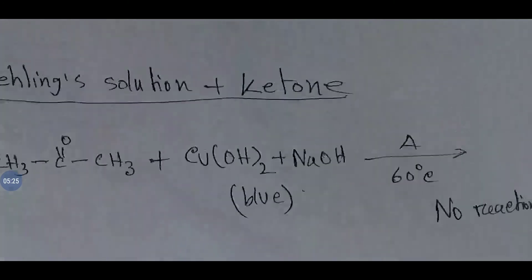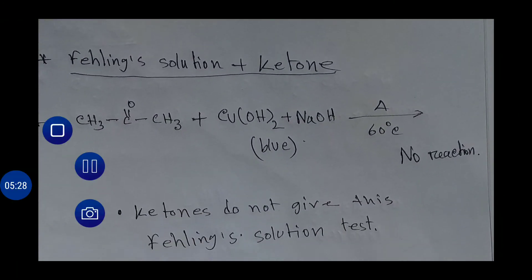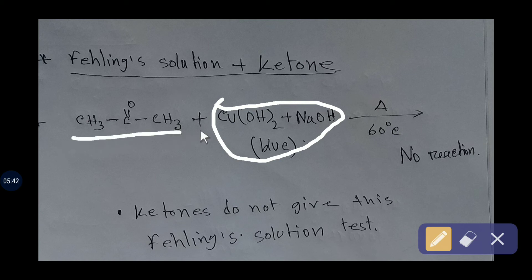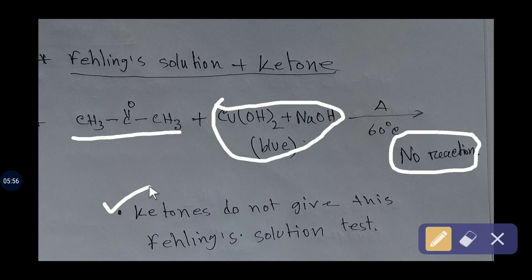Now we will look at the reaction between Fehling's solution and ketone. Fehling's solution contains copper hydroxide and sodium hydroxide. If you add Fehling's solution to propanone, no reaction will happen — the color of the solution will not change. Thus you can tell that ketone is present, because ketones never give a positive Fehling's test. I hope this lecture is helpful for you. Thank you for watching.